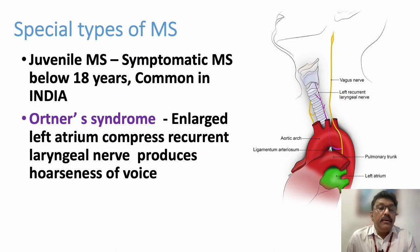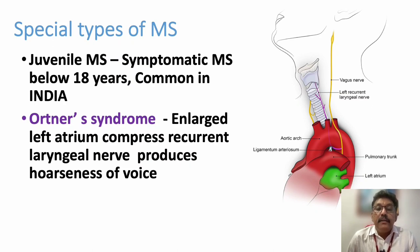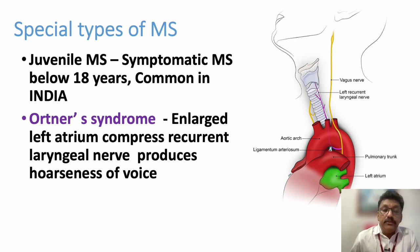Another important condition related to mitral stenosis is Hartner syndrome, where the enlarged left atrium compresses the recurrent laryngeal nerve and produces hoarseness of voice. Normally the left atrium does not compress the recurrent laryngeal nerve, but rarely in mitral stenosis a very large left atrium can compress the recurrent laryngeal nerve and produce hoarseness. This is called Hartner syndrome.